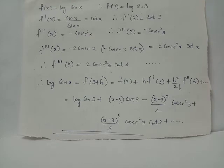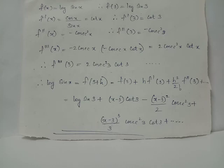Now we can write the full Taylor expansion: log sin x = f(3) + h·f'(3) + h²/2!·f''(3) + etc. Substituting back, log sin x = log sin 3 + (x - 3)·cot 3 - (x - 3)²/2 · cosec² 3 + (x - 3)³/3 · cosec² 3 · cot 3 + etc.